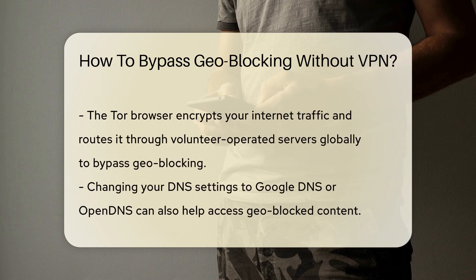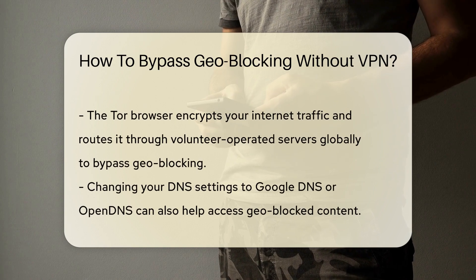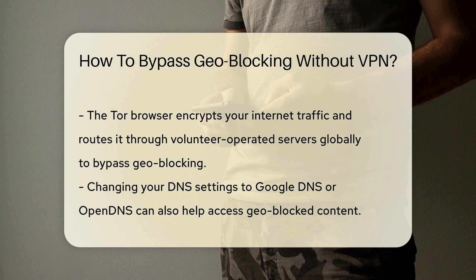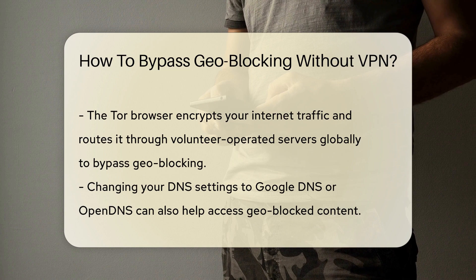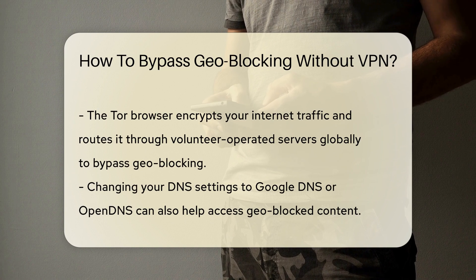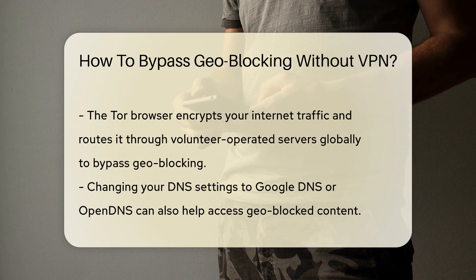Tor Browser can help bypass geoblocking by encrypting your internet traffic and routing it through a series of volunteer-operated servers globally. Changing your DNS settings to Google DNS or Open DNS can also help access geoblocked content.